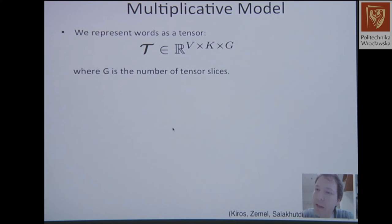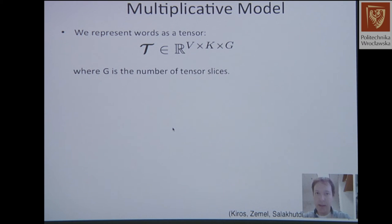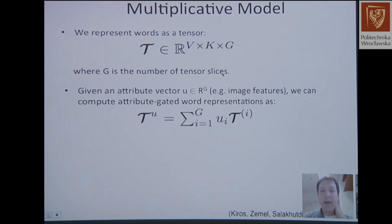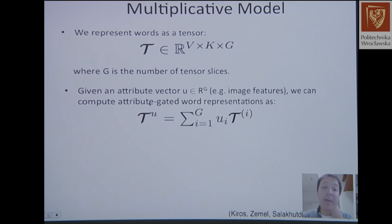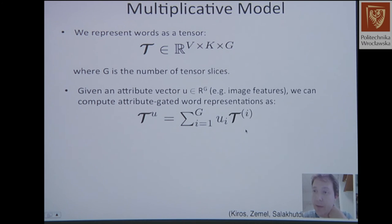Because we have to deal with images, instead of a neural language model, we'll look at multiplicative models. We represent words as tensors, where g is the number of tensor slices — sometimes called an attribute vector or image features. We compute an attribute-gated or image-gated word representation as a linear combination of the corresponding slices in the tensor. Typically g has one thousand dimensions for one thousand image features.